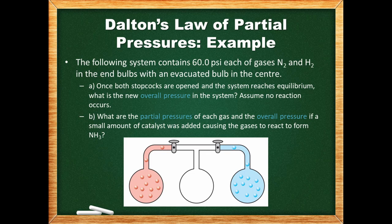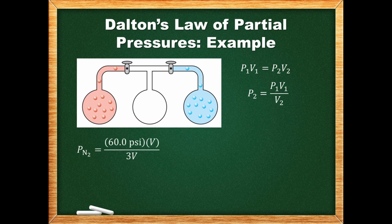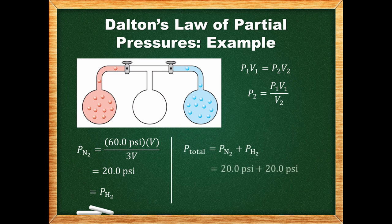Let's use this concept in an example problem. We have a system of three bulbs — one contains nitrogen, one contains hydrogen, and one is evacuated. The nitrogen and hydrogen are both at 60 psi. When the stopcocks are opened, we determine the new pressure of the overall system at equilibrium, assuming no reaction occurs. Using Dalton's Law, we focus on individual gases. For nitrogen, we find the partial pressure once the volume is increased using Boyle's Law — the initial volume is V and when stopcocks are open the volume becomes 3V. The hydrogen calculation is identical. To get the total pressure we add the partial pressures of the two gases.